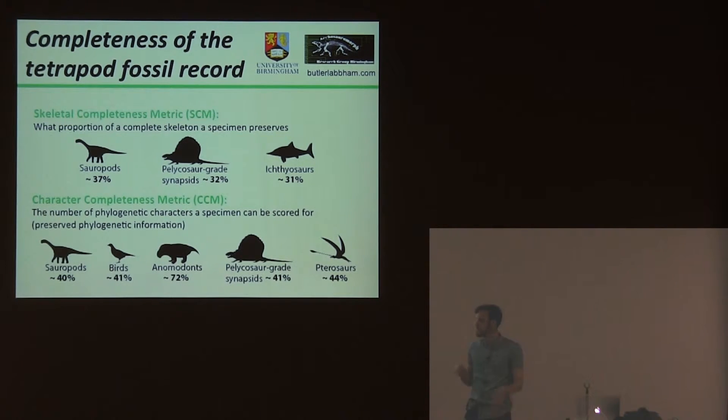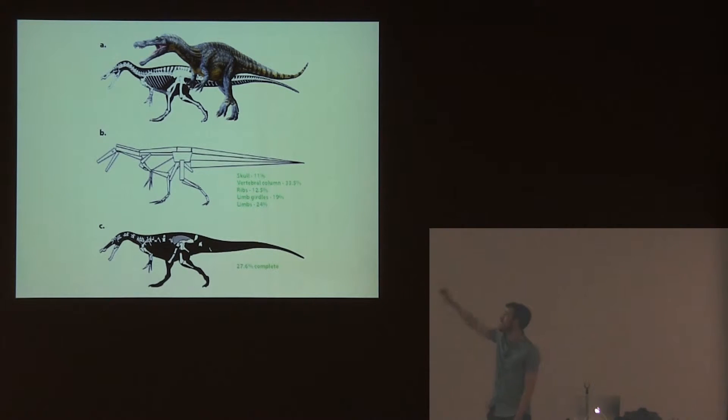At the moment, I'm collecting skeletal completeness data for non-avian theropod dinosaurs. As an example, at the top is a complete skeletal diagram of Baryonyx walkeri, and at the bottom are the actual preserved remains of its holotype specimen. To calculate how much of a specimen is actually preserved,